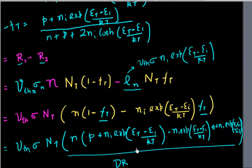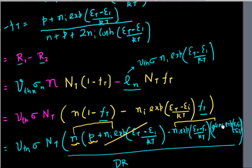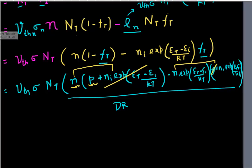Let me simplify the numerator first. I get the n·p term, and then an n·Ni term from here, and a similar n·Ni term from over here — so these two cancel out. Then this Ni times exp((Et minus Ei)/kT) times Ni times exp((kT)) — these exponents cancel out. So the only two terms remaining in my numerator are np minus Ni squared.